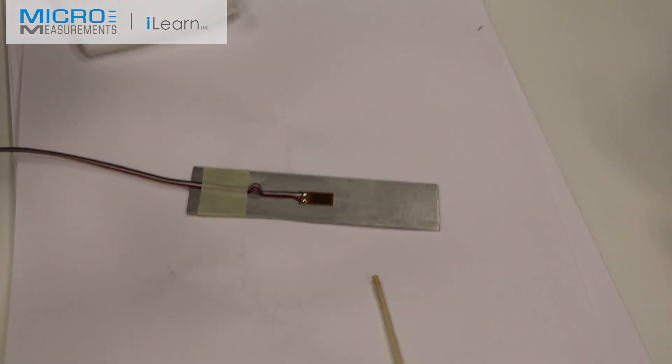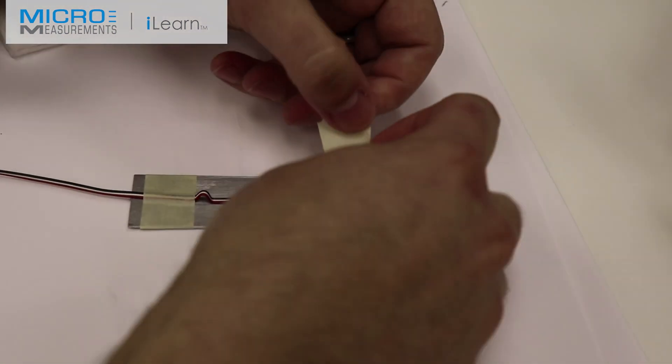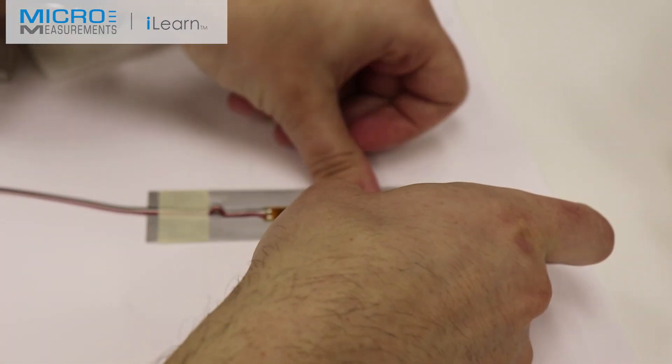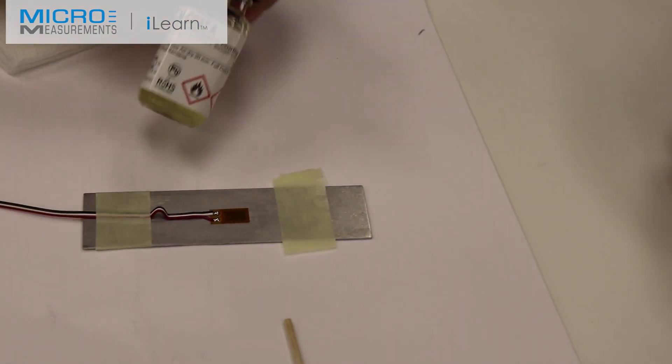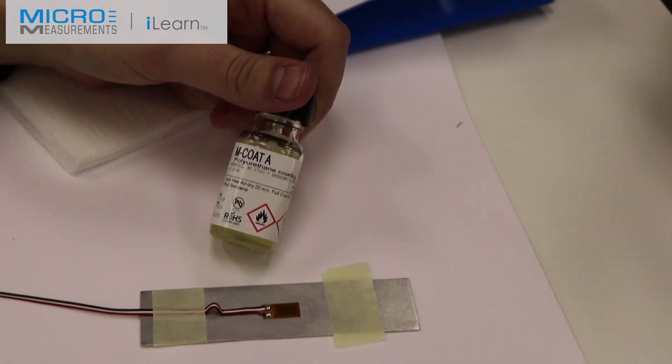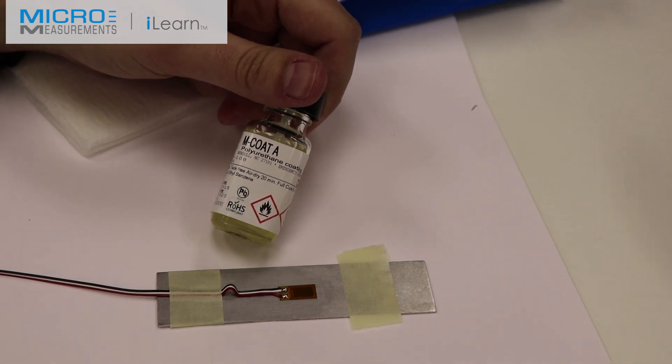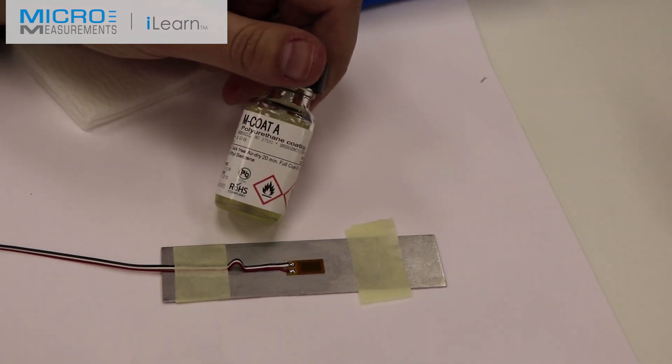Then he's going to put another piece of the paper drafting tape above the gauge so that he can mask off the area that the M-Coat A is going to cover. We're going to use M-Coat A because this is a laboratory conditions test and M-Coat A is basically good for laboratory conditions.